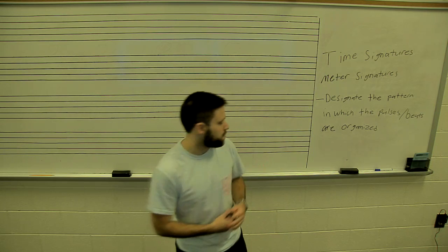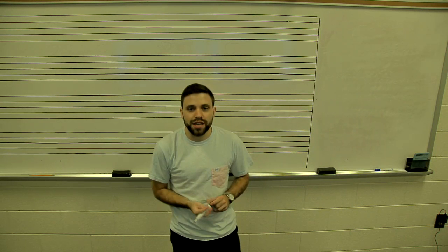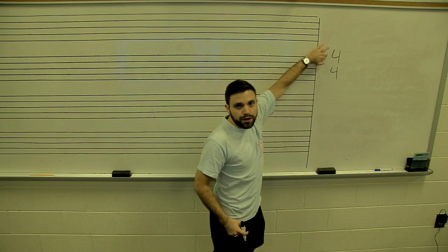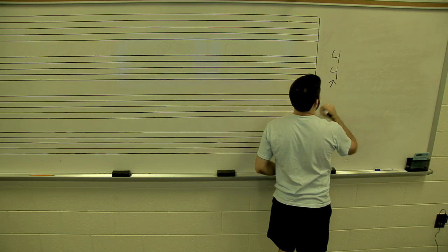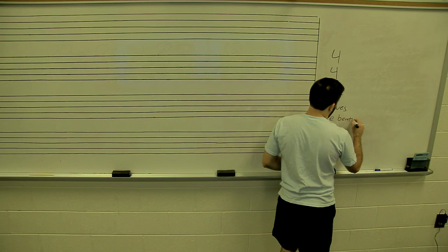So let's talk about the anatomy of the time signature. A typical time signature — one of the most common ones — is 4/4 time. There are two parts of a time signature: you have the top number and you have the bottom number. The bottom number tells us what receives the beat or pulse.